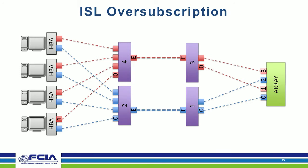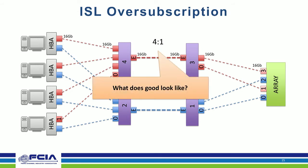ISL over-subscription is simply about how much traffic a single Fiber Channel line is carrying from one point to another. In an example with 16-gig ports, four 16-gig ports going to one switch with a single 16-gig ISL to another switch gives a four-to-one over-subscription. The question becomes: what does good look like for over-subscription?